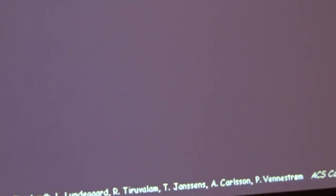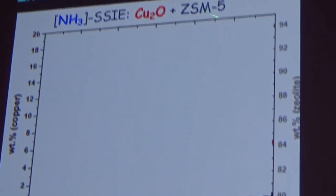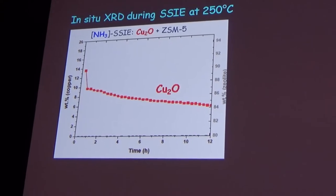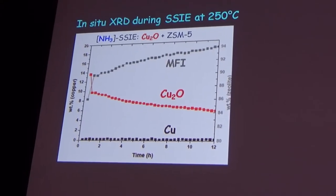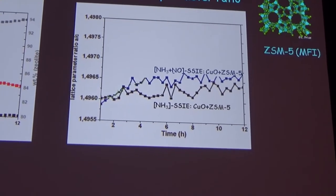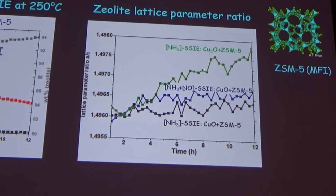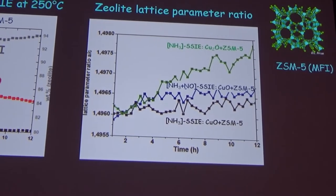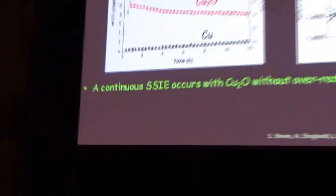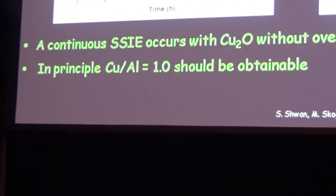Now we start with Cu2O—copper(I) oxide—using only ammonia in the feed, mixed with ZSM-5. We see just a decline of the Cu2O, no formation of metallic copper, and a gradual increase of the zeolite fraction in the system. The zeolite lattice parameter ratio shows a gradual increase of the zeolite unit cell, indicating more copper is being incorporated. A continuous solid-state ion exchange occurs with copper(I) oxide without any over-reduction of copper to metallic copper. In principle, we can reach copper-to-aluminum ratios of one.